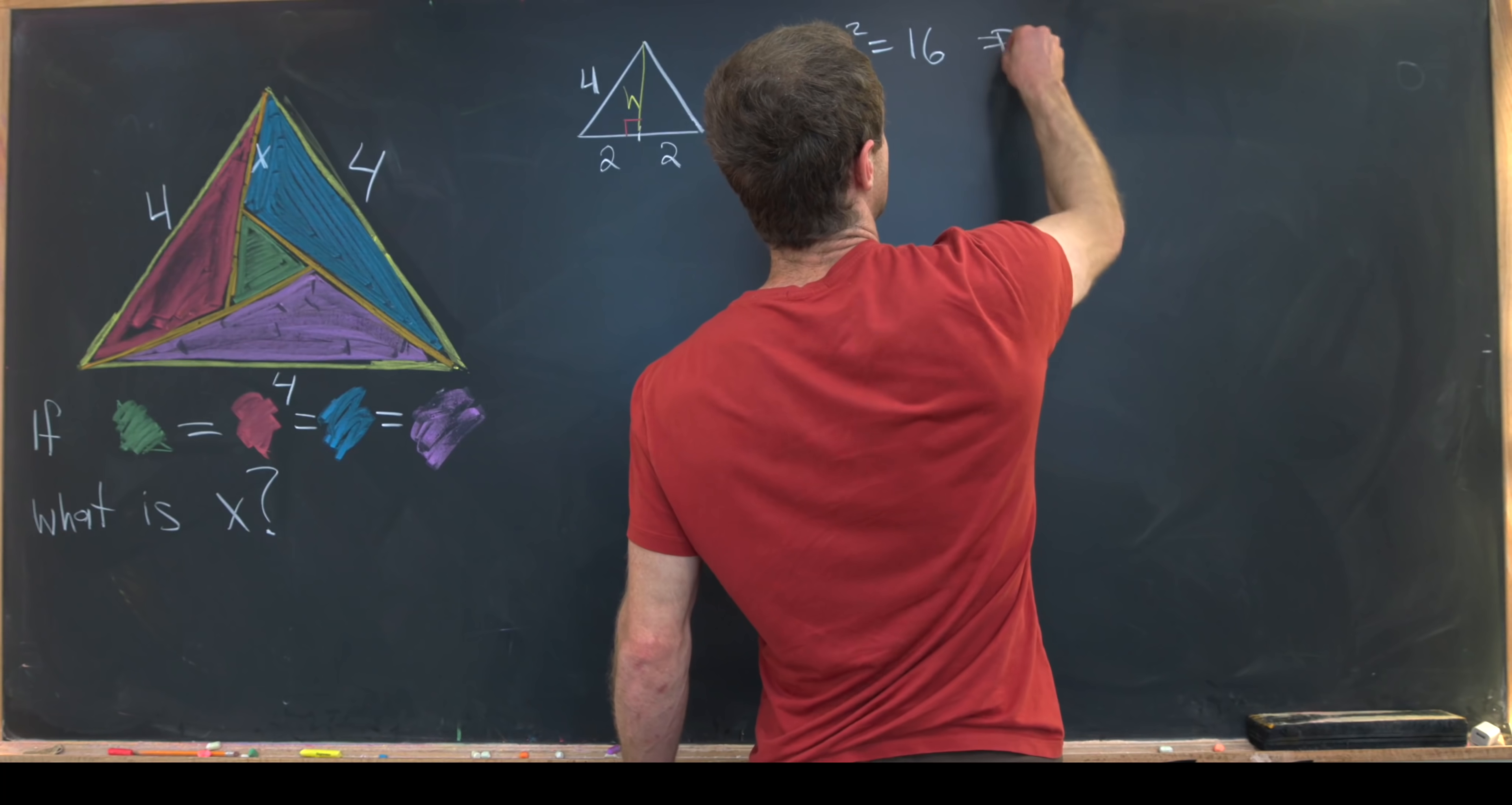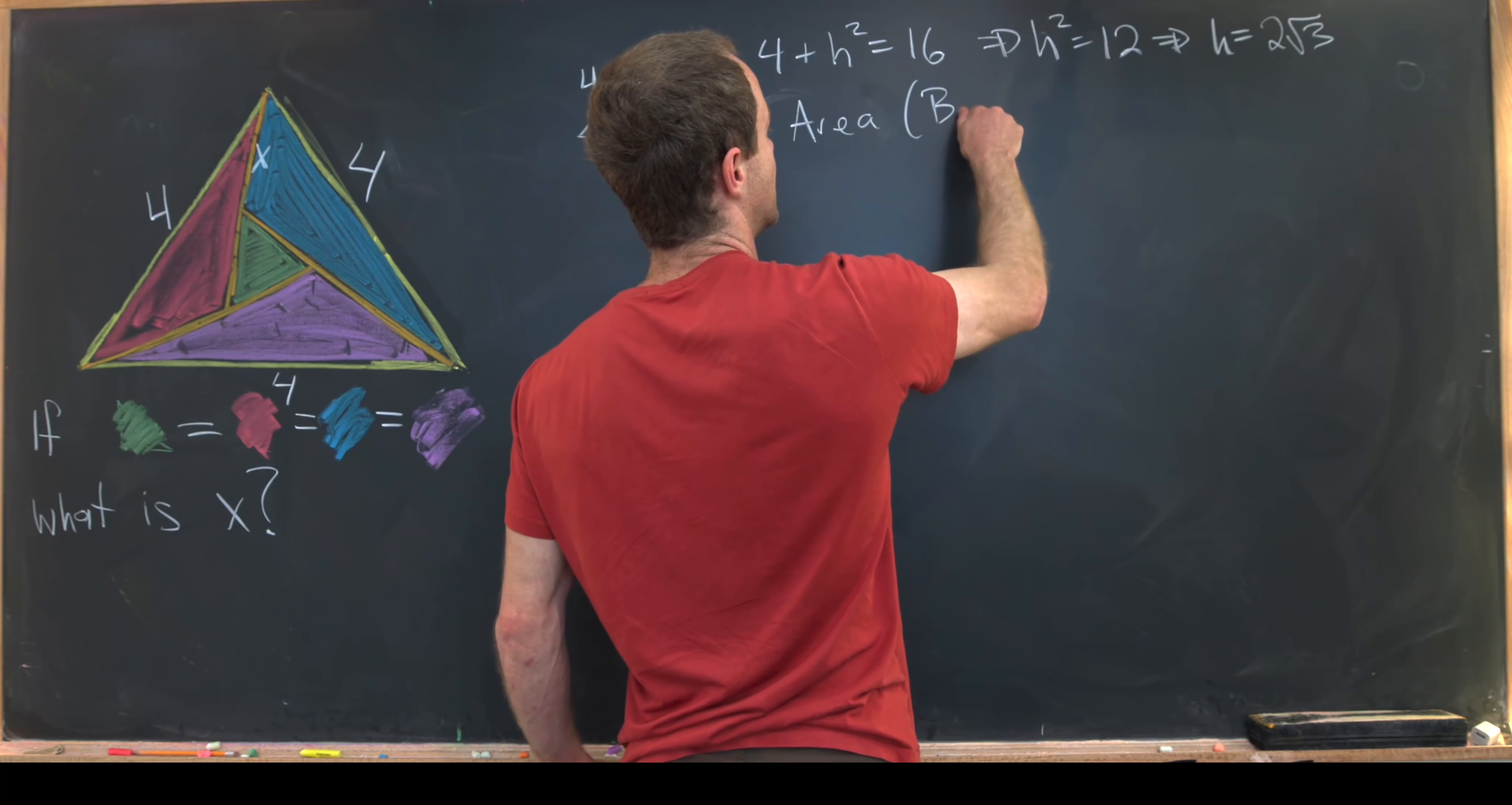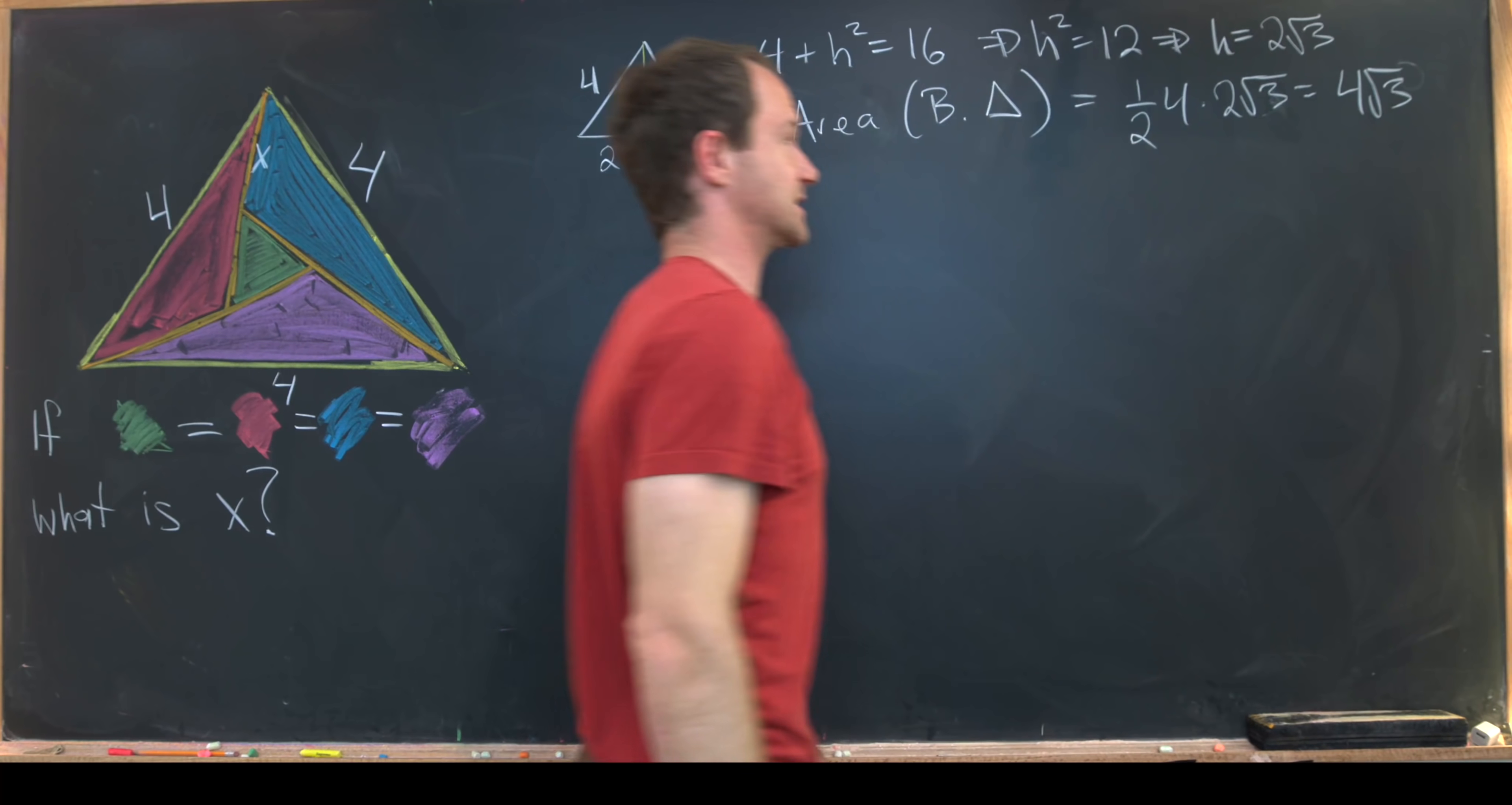That tells us that h squared is equal to 12, which means that h is equal to, let's see, 2 times the square root of 3. We can factor that 12 into a 4 times 3, take the square root of 4. So using the 1 half base times height formula for the big triangle, we see that area of big triangle will be equal to 1 half base, which is 4, times height, which is 2 times the square root of 3. Now doing some simplification, we see that that is 4 times the square root of 3.